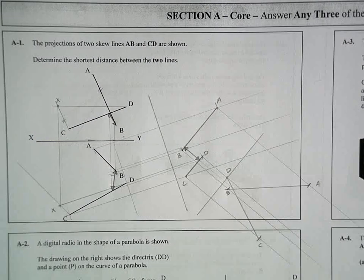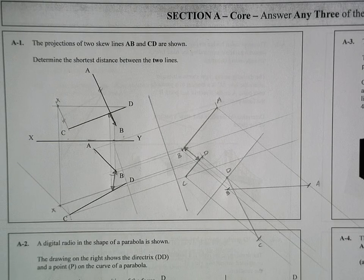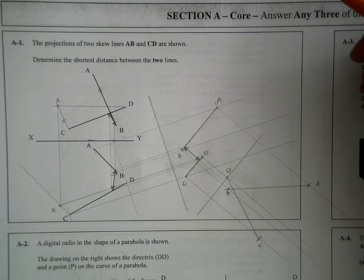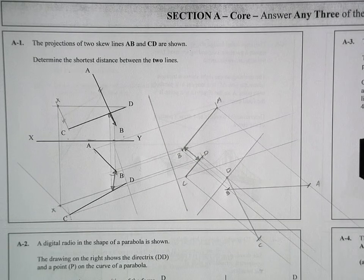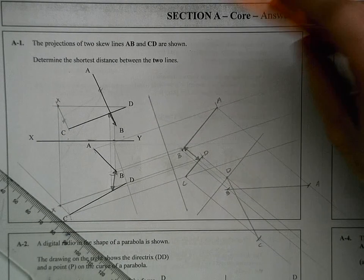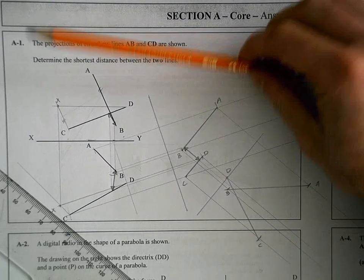Okay, you have two skew lines here. You're asked for the shortest distance between them - very common question we looked at last year. I'll walk you through the steps. The first thing you should be doing with two skew lines is draw a horizontal line.